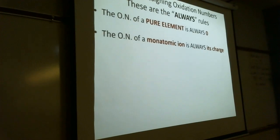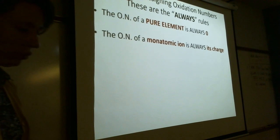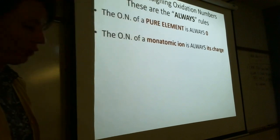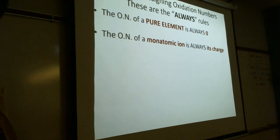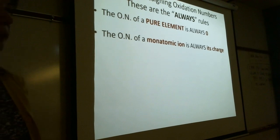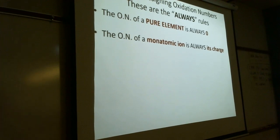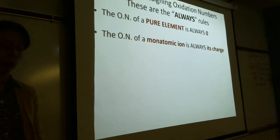Oxidation numbers are just numbers we assign so we can compare before to after to figure out what's going on in terms of electrons. The oxidation number for a pure element is always zero — this is an always rule with no exceptions. General rule number two: the oxidation number of a monatomic ion is its charge. So nitride would be minus three, and sodium ion would be plus one.